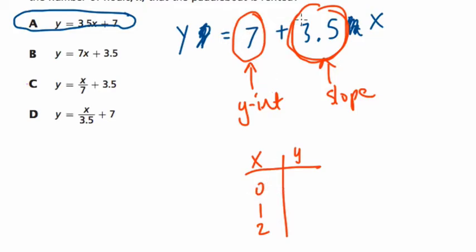If you plug in 0 for X, 7 plus 0 is 7. You plug in 1 for X, you get 10.5 for Y, because 7 plus 3.5 times 1 is 10.5. And then 2 for X, you get 7 plus 7, which is 14. Here you can see this equation does model a starting cost of 7 with an increase of $3.5 for every hour. Thanks.